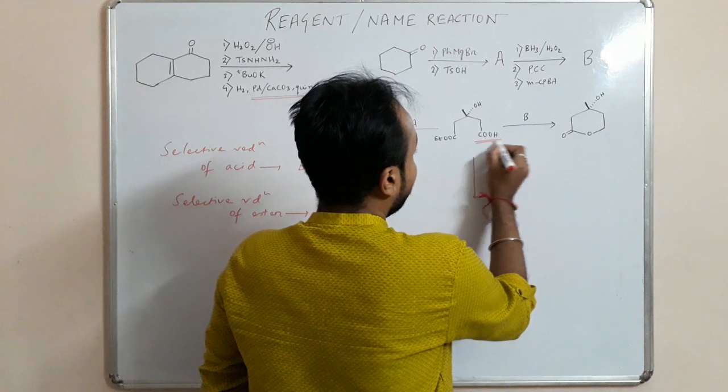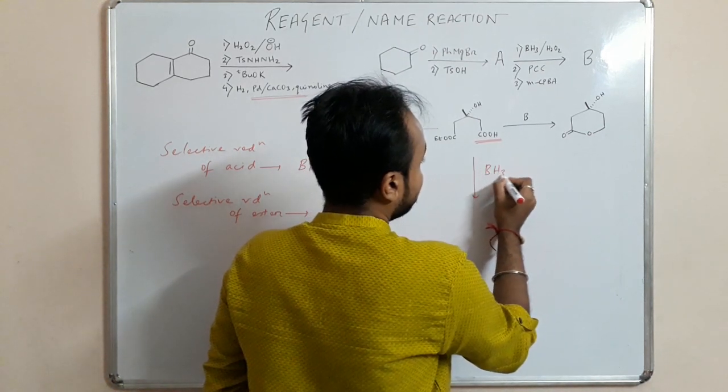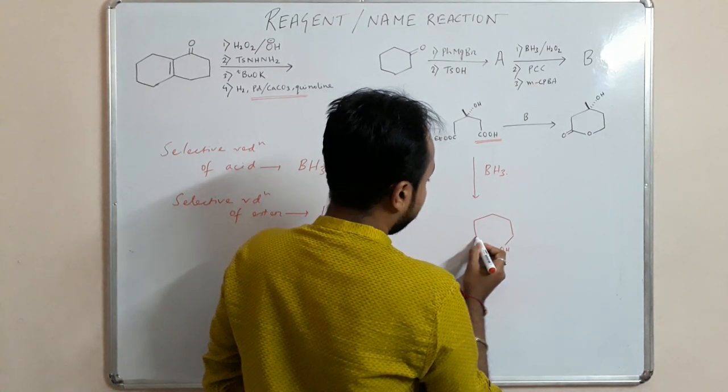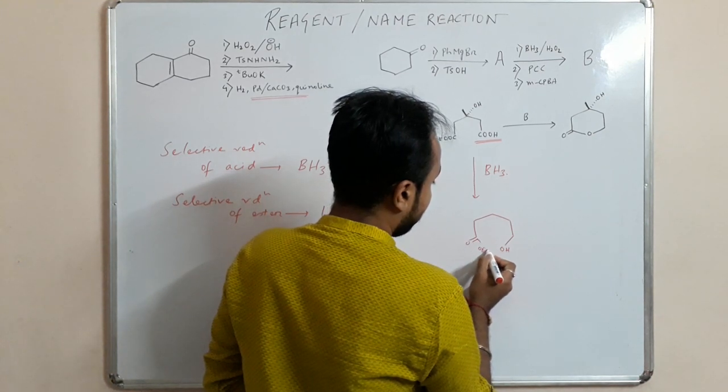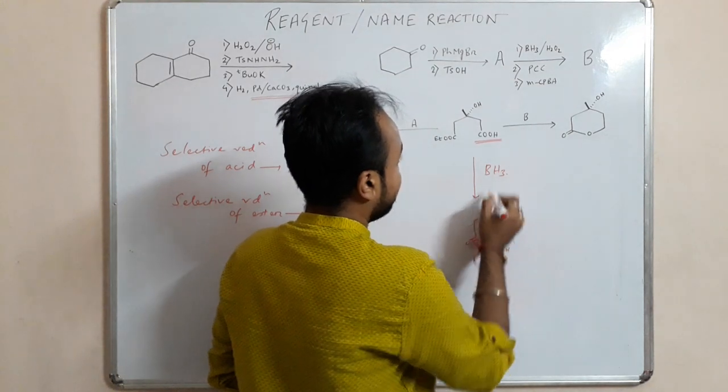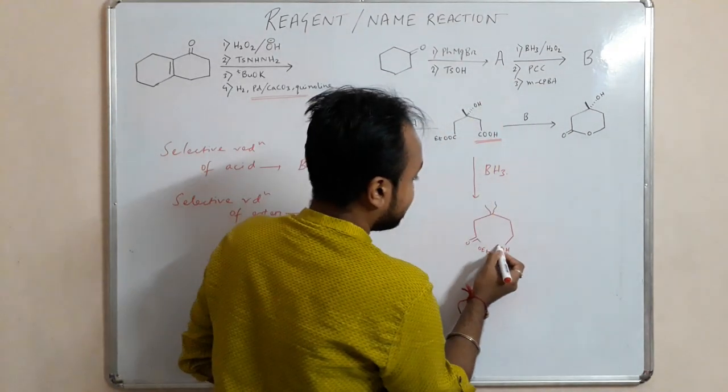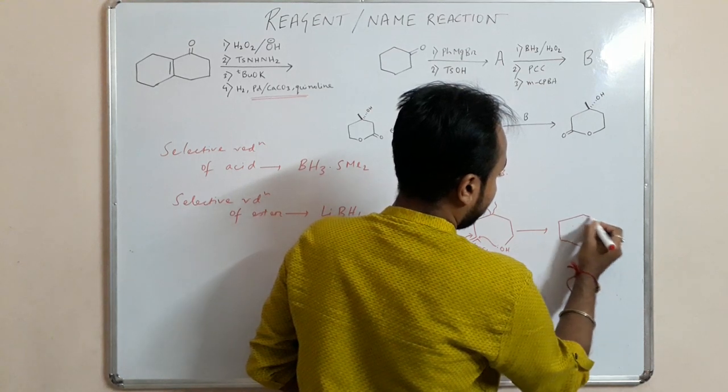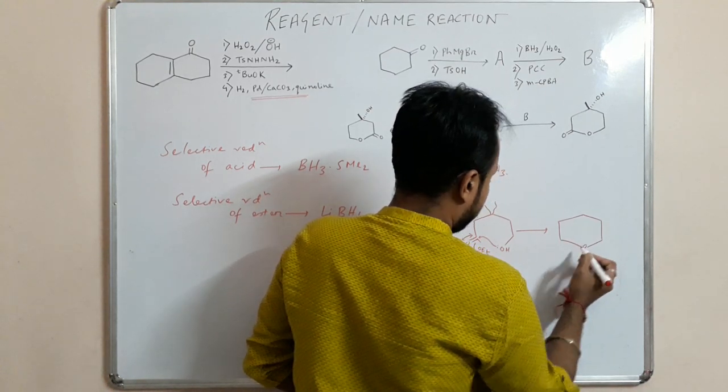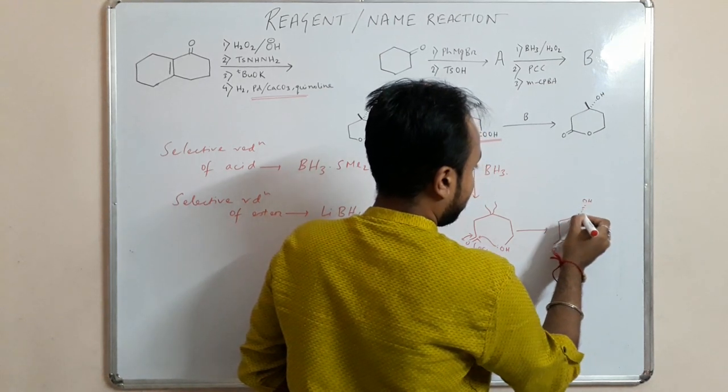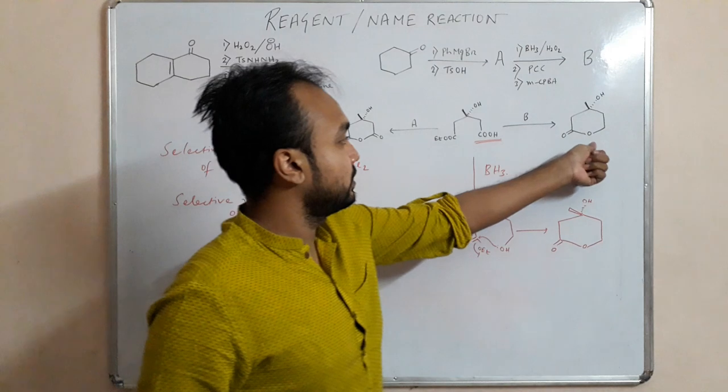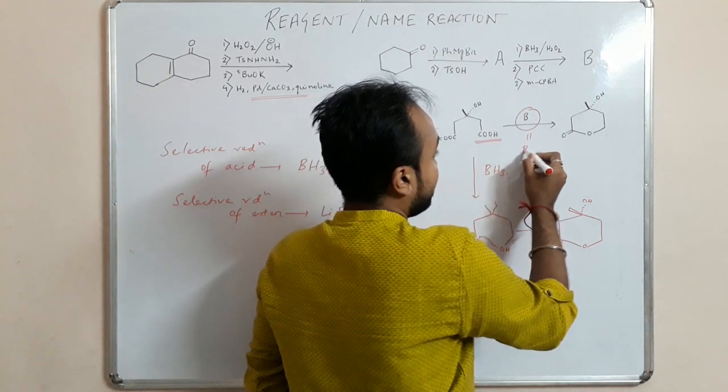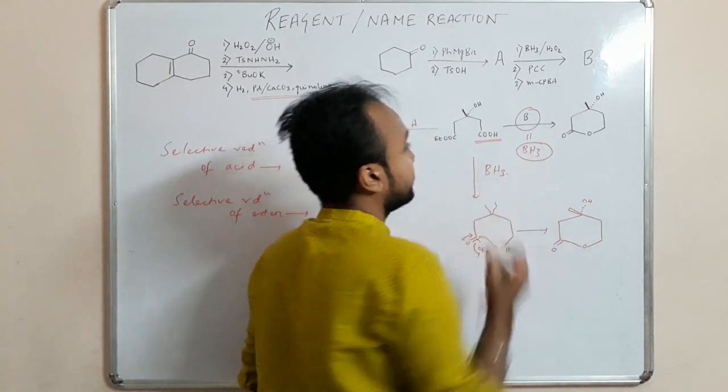So if we want to reduce the acid, let's say we use boron, what happens? So this will form OH, and this is our ester, and this piece here. So what happens? This attacks here, this leaves, so we are getting this product. So this is same as this one, so the reagent B will be BH3, reagent B will be BH3.